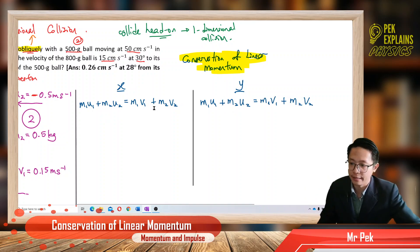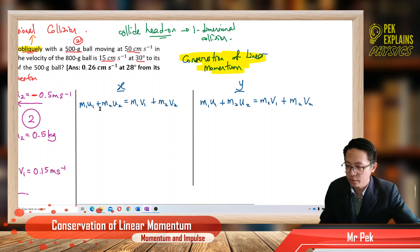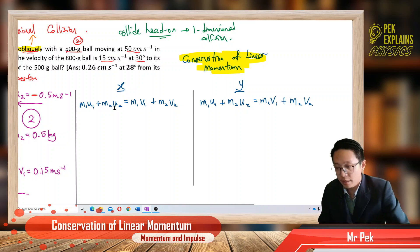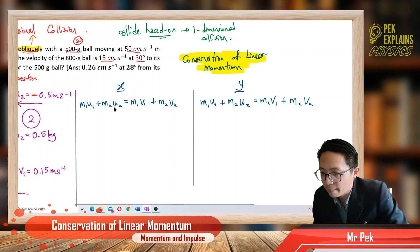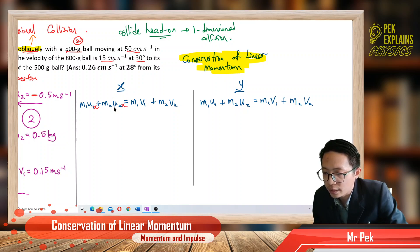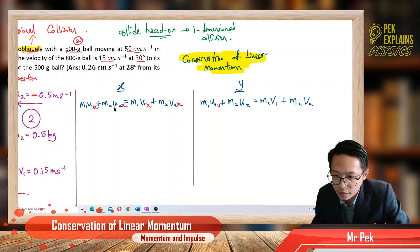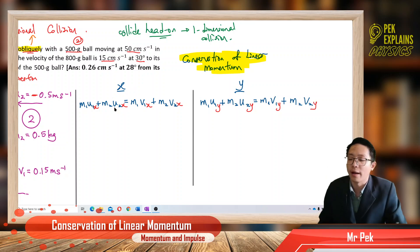Conservation of momentum applies, but you must include the components. For the x-component equation, you write M1·U1x + M2·U2x = M1·V1x + M2·V2x. The same applies for the y-component: M1·U1y + M2·U2y = M1·V1y + M2·V2y. You must add the component subscripts to each velocity term.